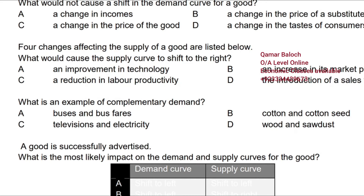Question: what would cause a shift in the demand curve for a good? As explained, the demand curve shifts only due to non-price factors. Option C — a change in the price of the good — is a price factor; it causes movement along the same demand curve, not a shift. Income, taste and fashion, and prices of substitutes and complements are demand shifters.